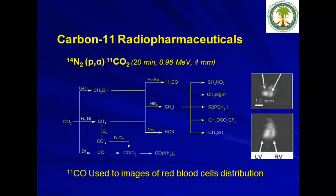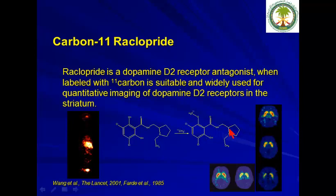Moving to carbon-11: there is not much interest from physicians to work with carbon-11 except in selected places. Using C11-CO2, you can produce a variety of precursors and radiolabel a variety of radiotracers, similarly to how F-18 is used.